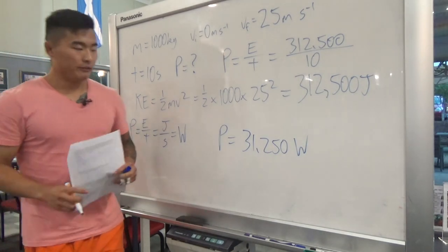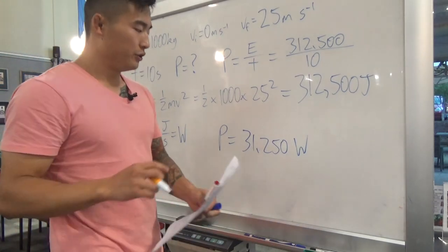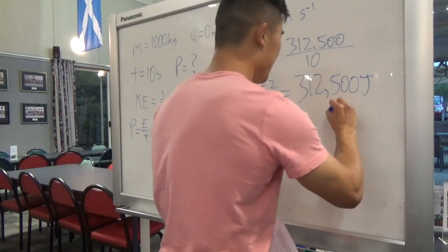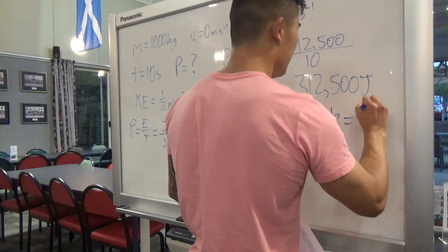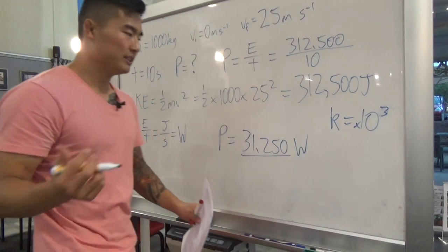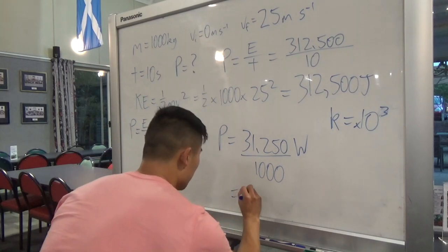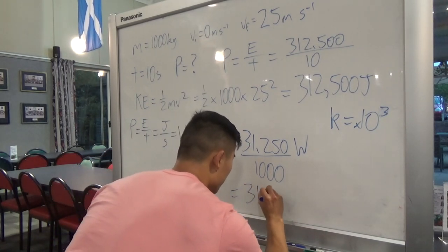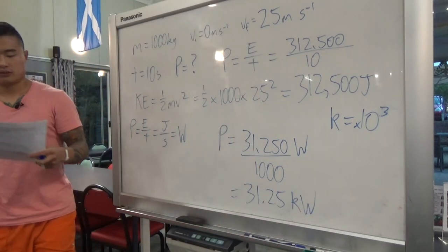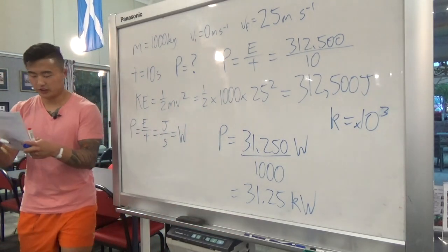The answer is required in kilowatts. The prefix k means times 10 to the 3, or 1000, so we divide by 1000. That gives us 31.25 kilowatts.